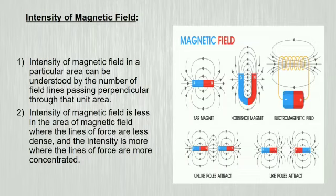Let's know intensity of magnetic field. Intensity of magnetic field in a particular area can be understood by the number of field lines passing perpendicular to that unit area. Intensity of magnetic field is less in the area where the lines of force are less dense, and the intensity is more where the lines of force are more concentrated.